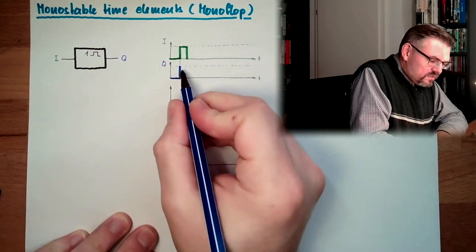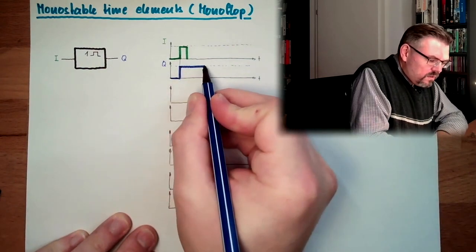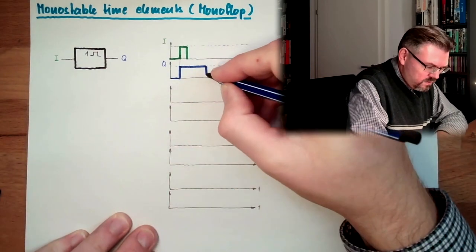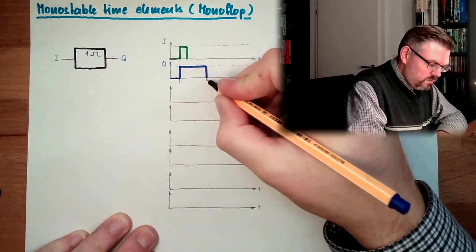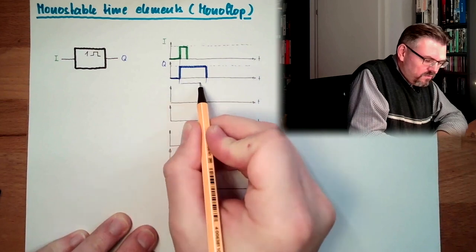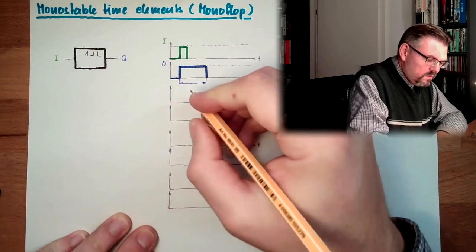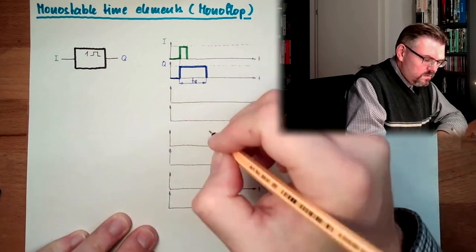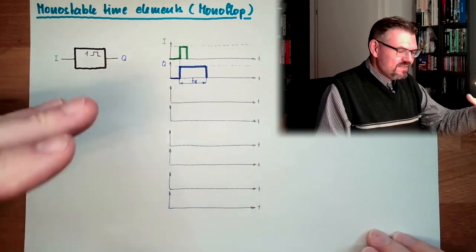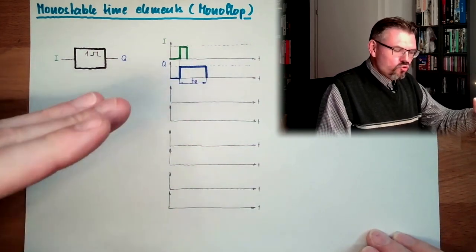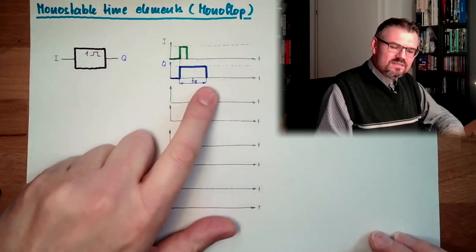And after a certain delay time, here we would have dq, the delay time of the element. The element is returning exactly to the state, to the previous stable state.